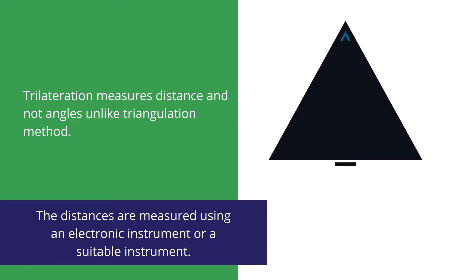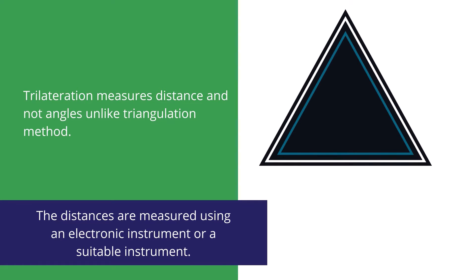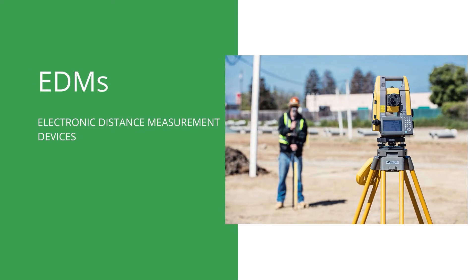Electronic Distance Measurement devices, EDMs, are used to determine the distance in trilateration surveying.